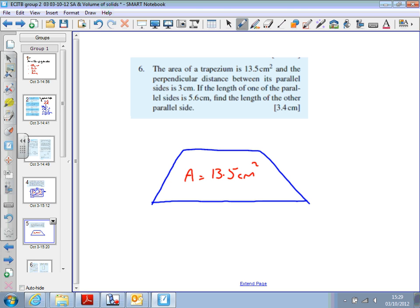I also know that the perpendicular distance between its parallel sides, these are the parallel sides, is 3 centimeters. So, if I were to just put this dotted line in here, I know this dimension here is 3 centimeters. And if the length of one of the parallel sides is 5.6, find the length of the other.